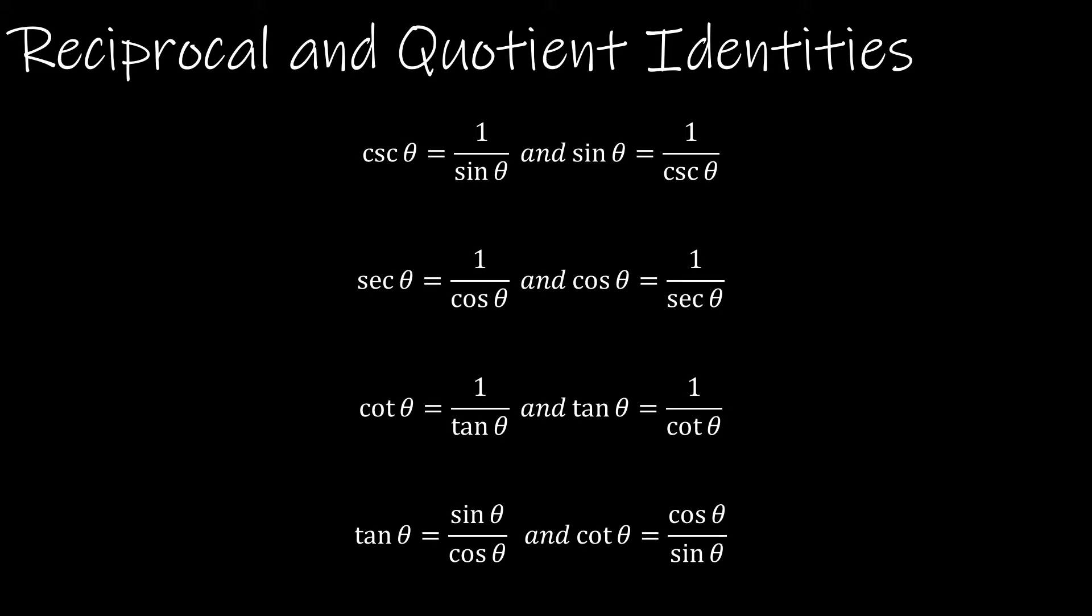Cotangent and tangent are reciprocals, so if I take cotangent and flip it over, I get tangent and vice versa. And then, of course, there is tangent is the same as sine over cosine, and cotangent is the same as cosine over sine.